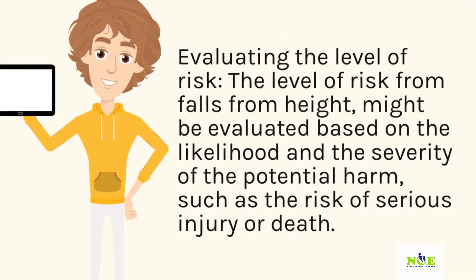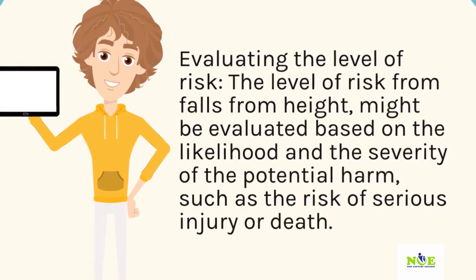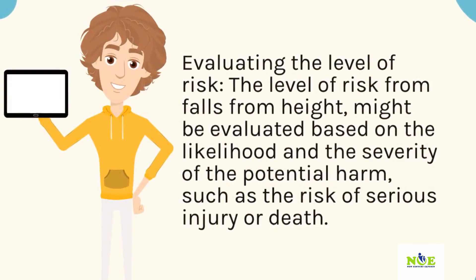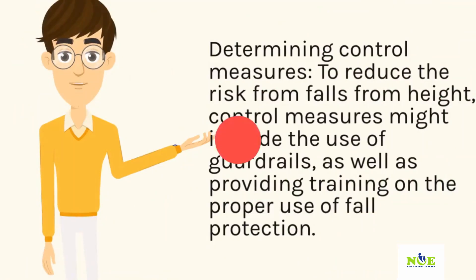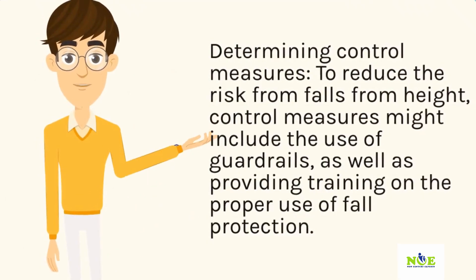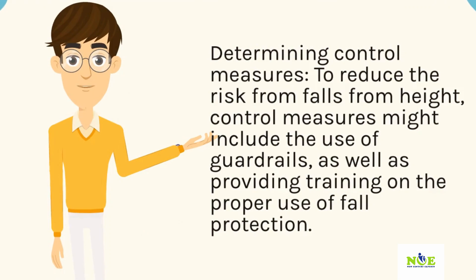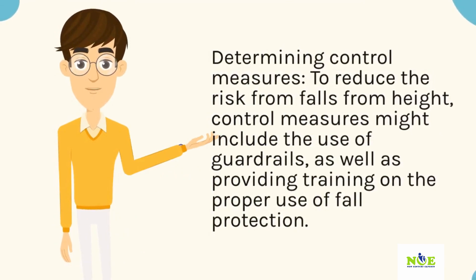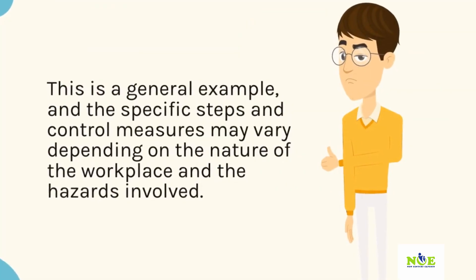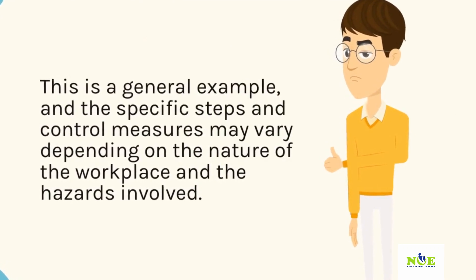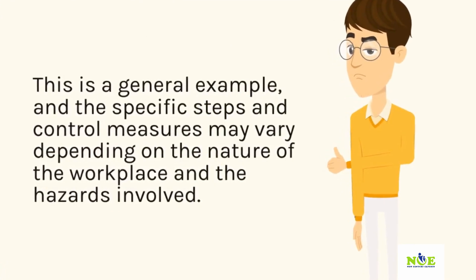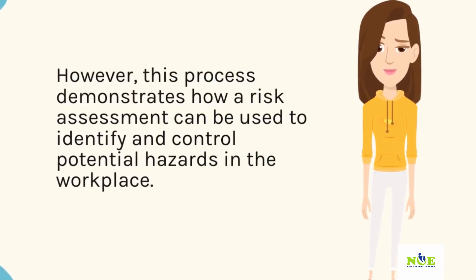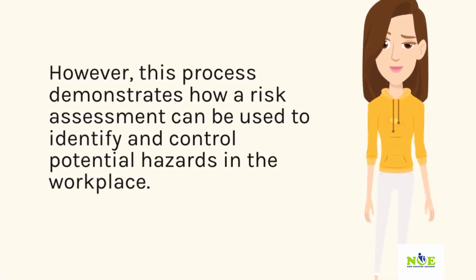Evaluating the level of risk: the level of risk from falls from height might be evaluated based on the likelihood and the severity of the potential harm, such as the risk of serious injury or death. Determining control measures: to reduce the risk from falls from height, control measures might include the use of guardrails, as well as providing training on the proper use of fall protection. This is a general example, and the specific steps and control measures may vary depending on the nature of the workplace and the hazards involved. This process demonstrates how risk assessment can be used to identify and control potential hazards in the workplace.